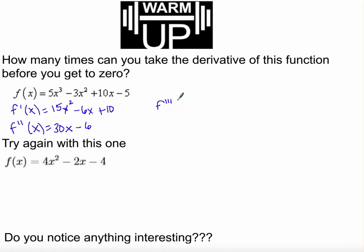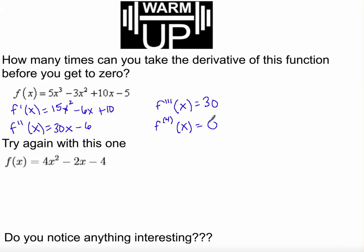Now let's take the third derivative. So 1 times 30 is 30, and the derivative of negative 6 is zero. However, this is still not zero. So we're going to take the derivative one more time, and I'll write a little four here so we know this is the fourth time we've taken the derivative. And the derivative of a constant is zero. So how many times can we take the derivative of this function before we get to zero? Four times. It was that fourth derivative that gave us a zero.